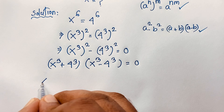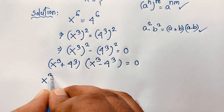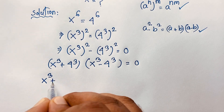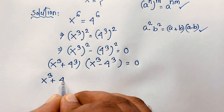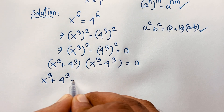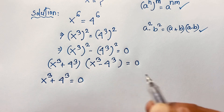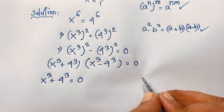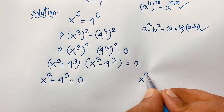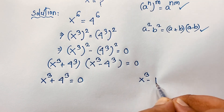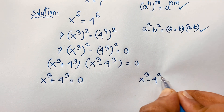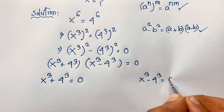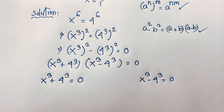Our first case is x to the power 3 plus 4 to the power 3 is equal to 0. In the other case it will be x to the power 3 minus 4 to the power 3 is equal to 0.